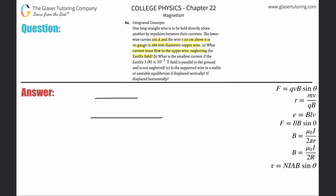So we have two wires here. The lower wire carries 100 amps. They tell us the distance — 7.5 centimeters above, which we convert to 0.075 meters. The top wire is 10 gauge copper wire. That's probably important in terms of density. The density of copper is about 8.8 times 10 to the third kilograms per cubic meter. We're trying to figure out the current in the top wire.